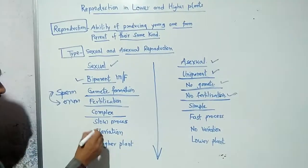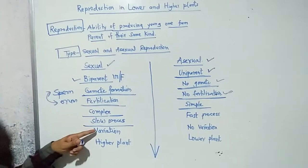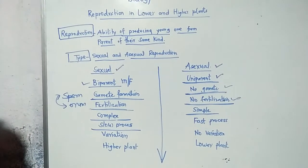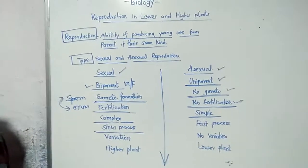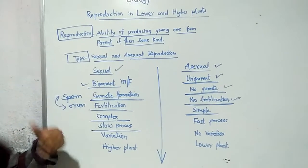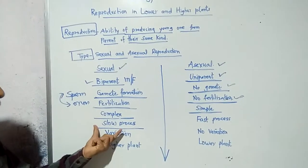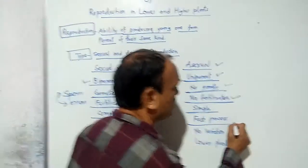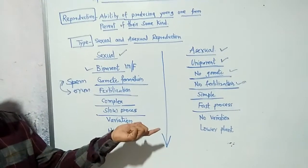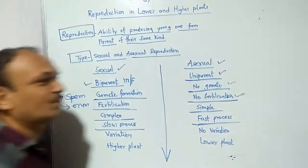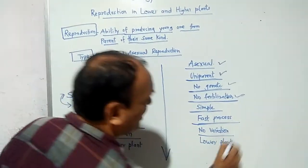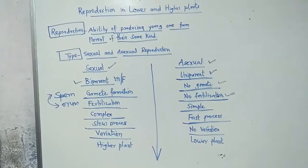The fifth difference is speed. Sexual reproduction is a slow process — for example, a human being requires nine months after fertilization to produce a baby. But in asexual reproduction, if you cut a stem from a plant it grows fast — within one, two, three, or four days comparatively.